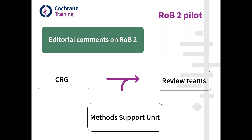The second part of the RoB 2 pilot involves supporting CRG and editorial teams to provide their own editorial comments on protocols and reviews using Risk of Bias 2. For subsequent protocols, editorial teams can draft their own comments and the method support unit will help them do so initially. The aim is that CRGs will quickly gain the knowledge to assess RoB 2 protocols themselves, while always having the option to ask for support. The overall idea is to get CRGs comfortable with looking at protocols and reviews using Risk of Bias 2.